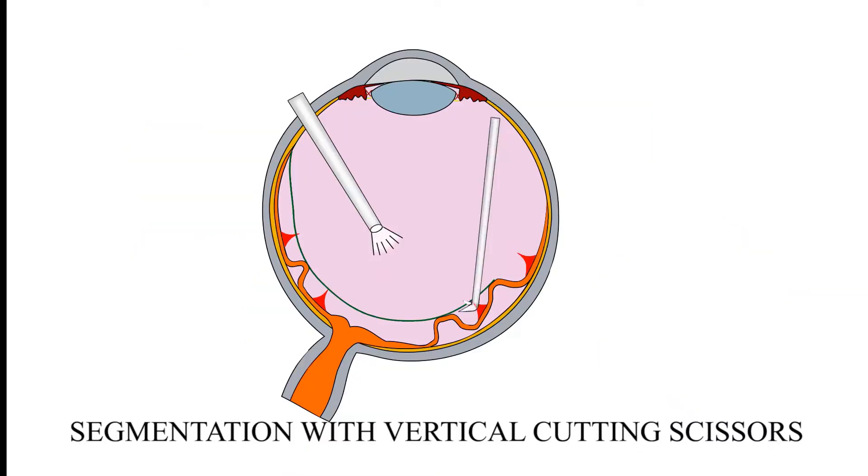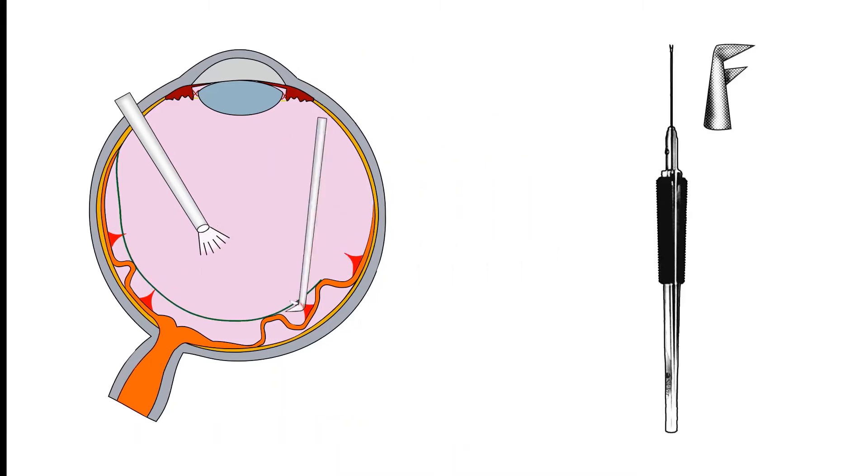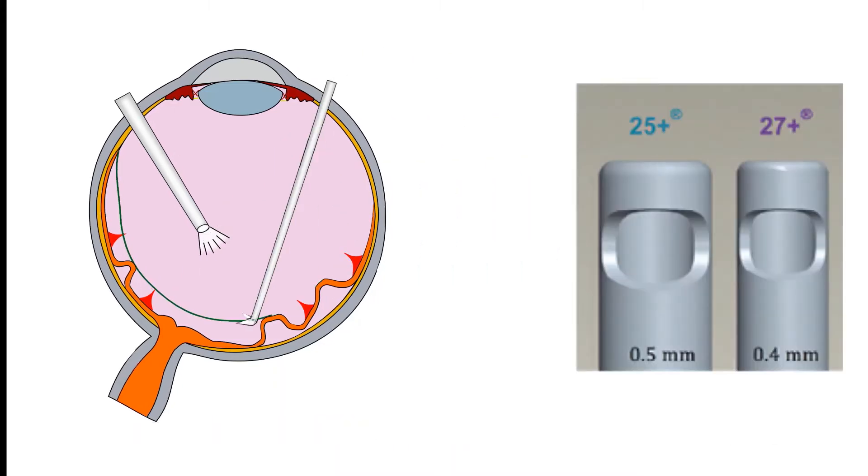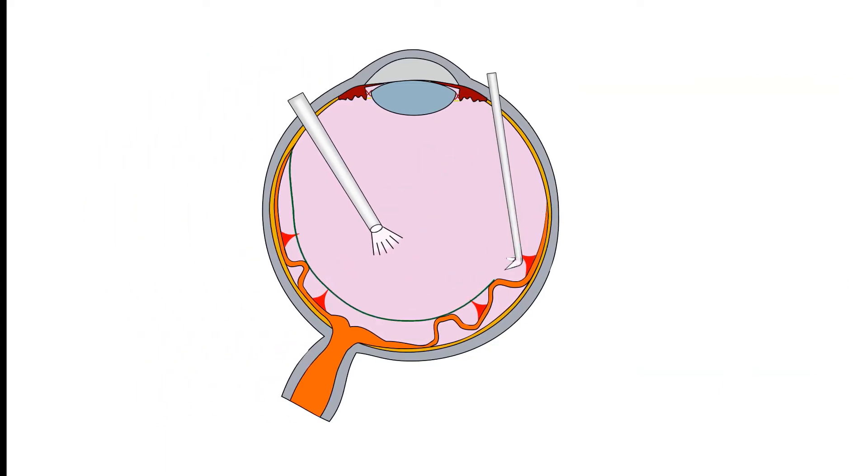Segmentation involves the vertical cutting of epiretinal membranes into smaller segments and this can be accomplished either with vertically cutting scissors or a mechanized vitreous cutter. This pictorial representation demonstrates segmentation using vertically cutting scissors.